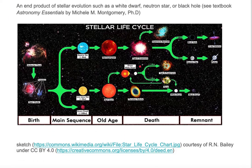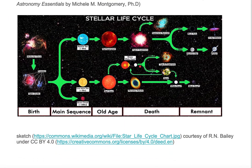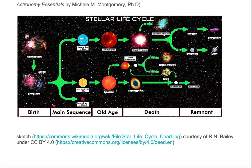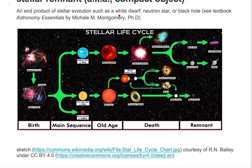Here we're looking at a sketch of stellar life cycle. Objects start out forming as stars and then as they age and die they turn into end products. Examples of end products are a white dwarf, a neutron star, or a black hole.